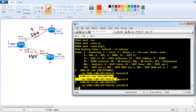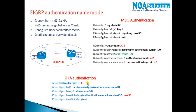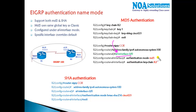This is how we configure authentication in EIGRP named mode. The major difference is that all configurations come under the routing instance — we define the interface there. It's simplified: we just use 'authentication mode' and choose either MD5 or HMAC-SHA algorithm, making named mode authentication cleaner than the classic interface-level configuration approach.